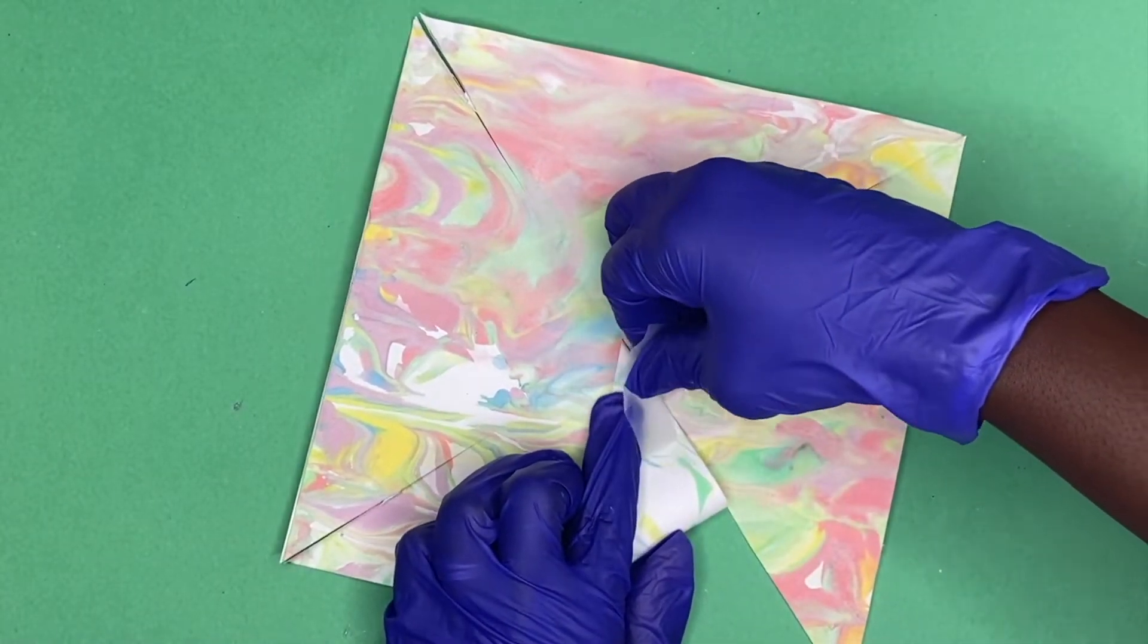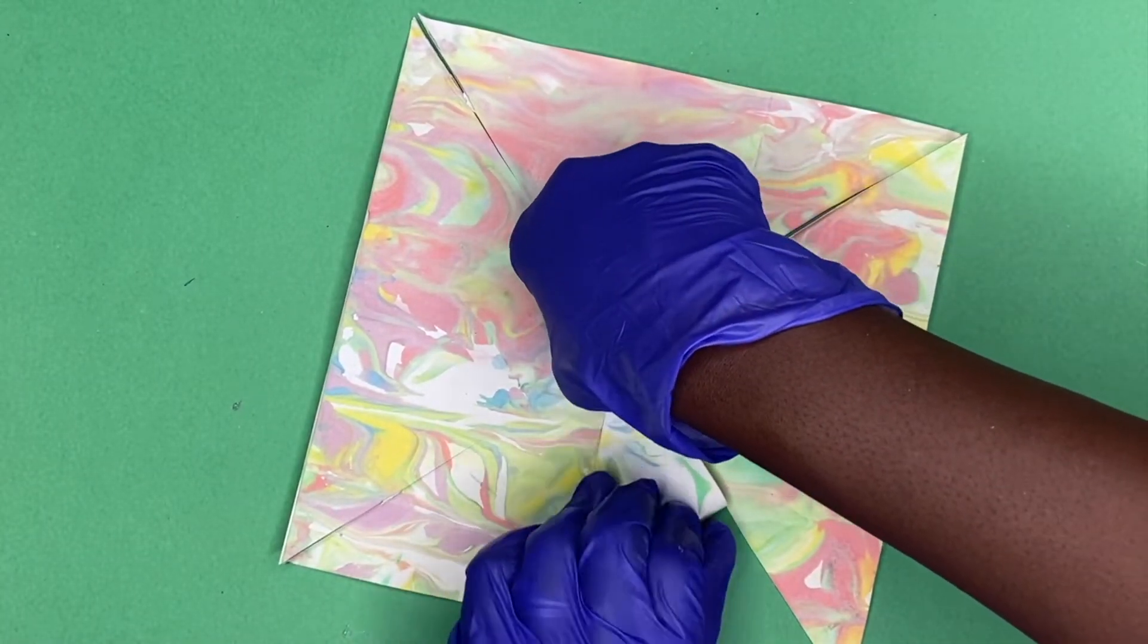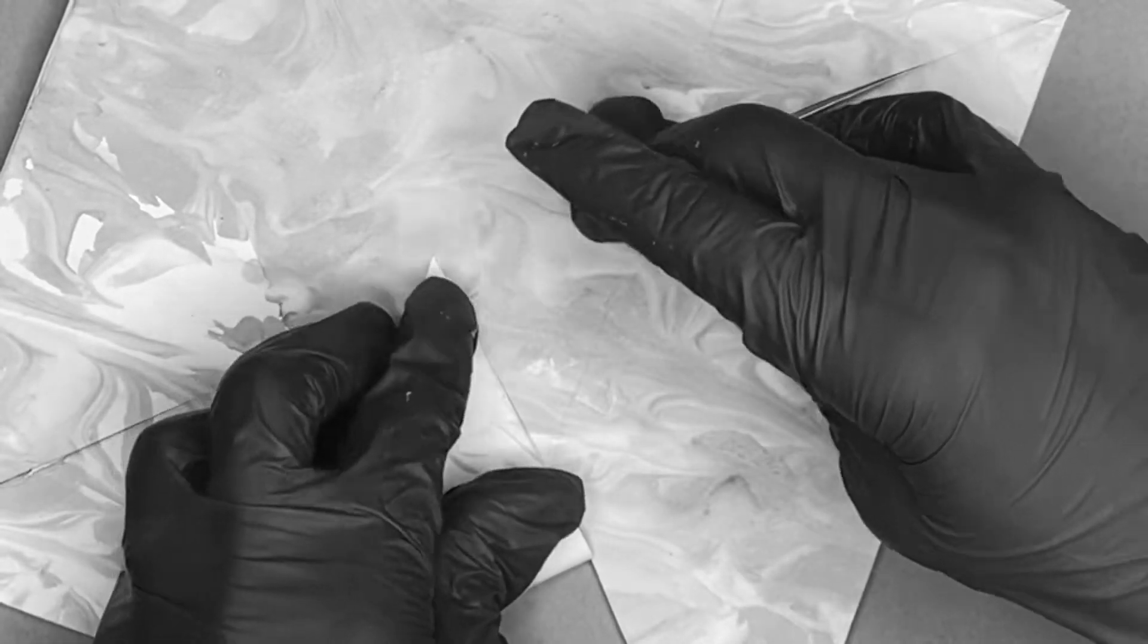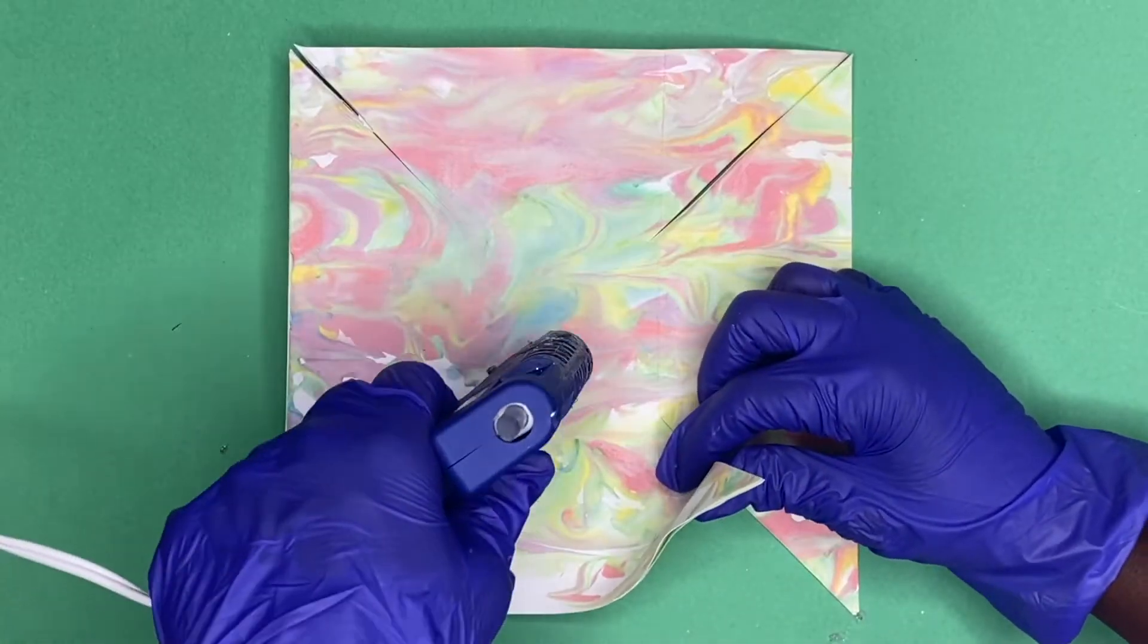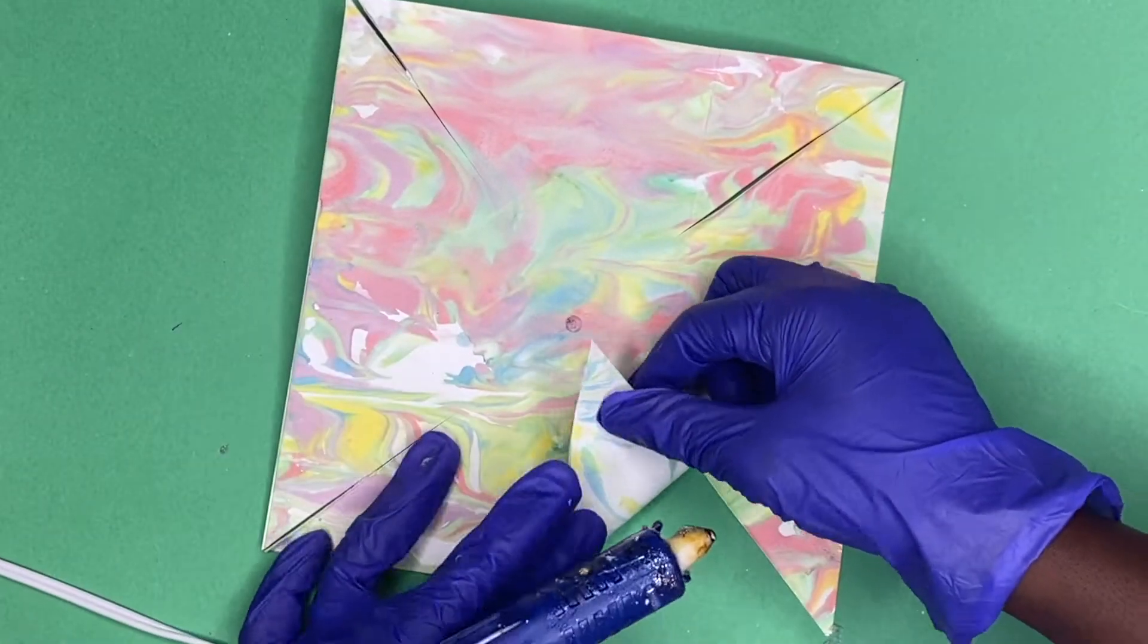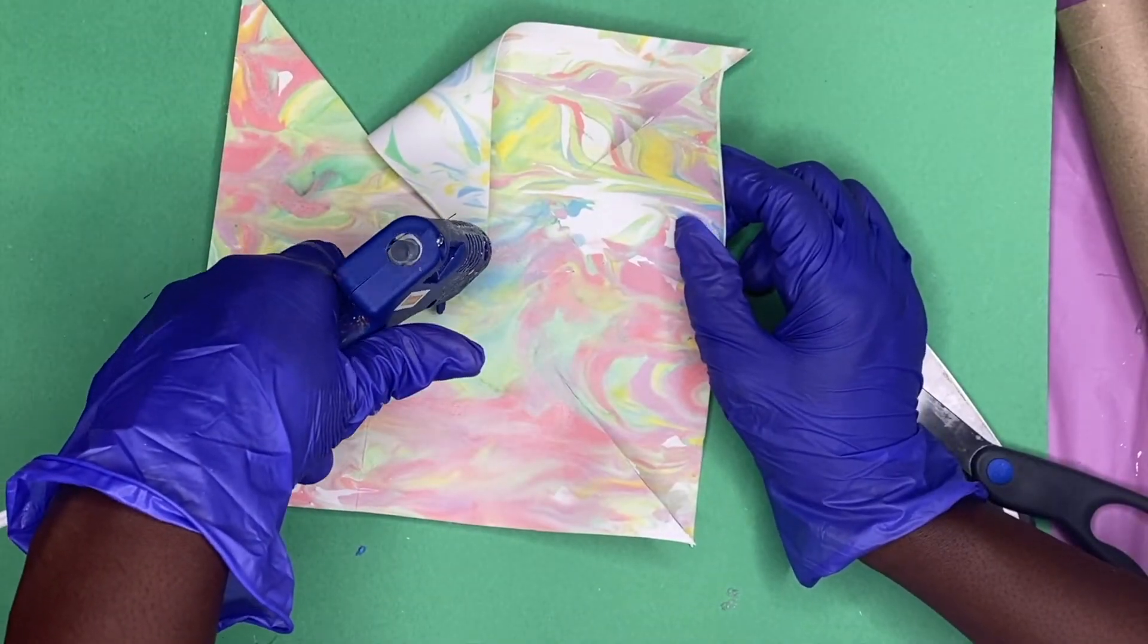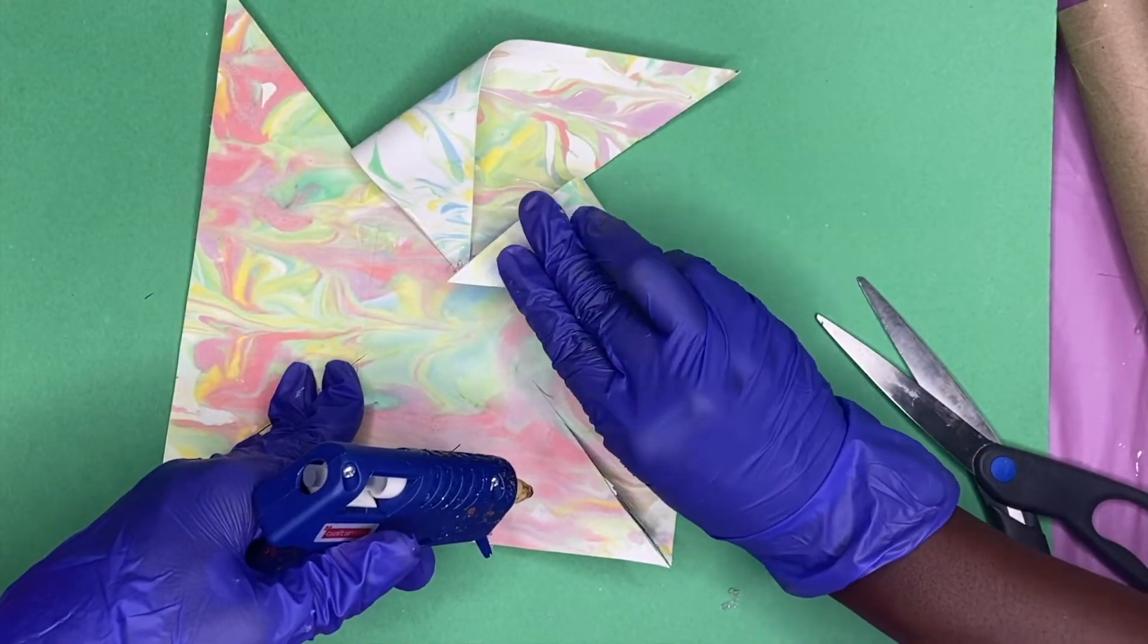So I was going to try to use tape, but tape does not work because this is actually cardstock, so I had to use a hot glue gun. Now the only problem with using a hot glue gun is just don't make the glue too thick because you're gonna have to ultimately poke a tack through this center.